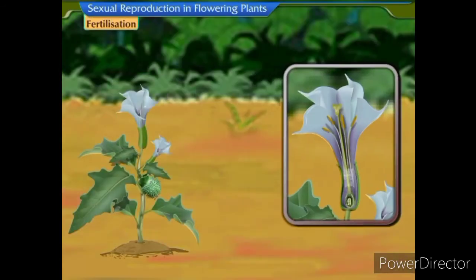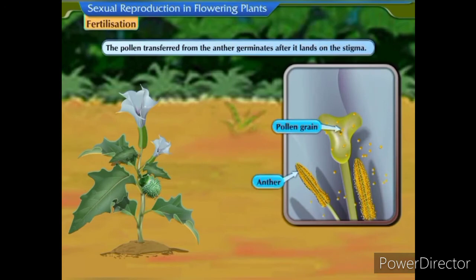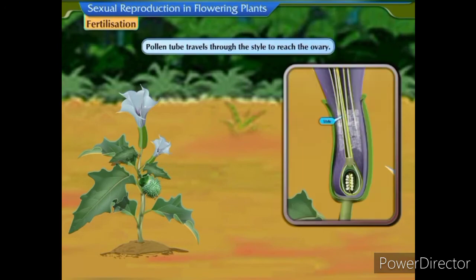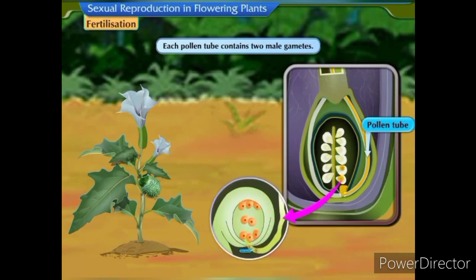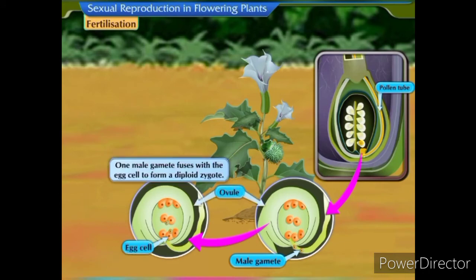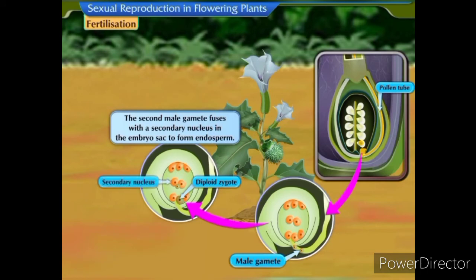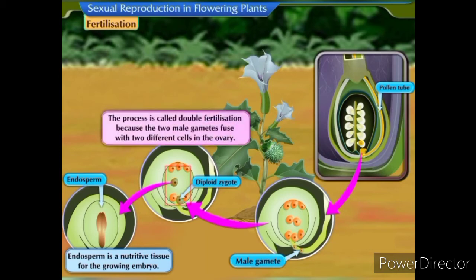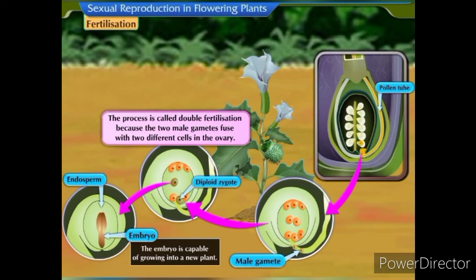Fertilization: The pollen transferred from the anther germinates after it lands on the stigma. The pollen tube grows out from a pollen grain and travels through the style to reach the ovary. Each pollen tube contains two male gametes. The male gametes are released near the egg cell present in the ovule. One male gamete fuses with the egg cell to form a diploid zygote. The second male gamete fuses with a secondary nucleus in the embryo sac to form endosperm — a nutritive tissue for the growing embryo. This process is called double fertilization because the two male gametes fuse with two different cells in the ovary. The zygote develops into an embryo, which is capable of growing into a new plant.